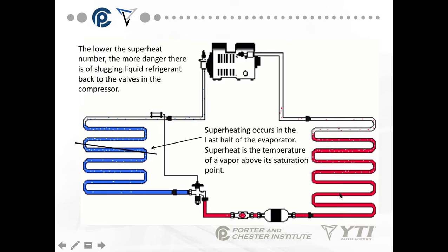Superheating, which is the opposite of sub-cooling, occurs in the last half of the evaporator. Superheat is the temperature of vapor above its saturation point. We're absorbing heat through the boiling process — a latent heat change, going from liquid to vapor — and still absorbing some heat as the refrigerant leaves the evaporator. The lower the superheat number, the more danger there is of slugging — sending liquid refrigerant back to the valves of the compressor. Superheat in most systems is between 8 and 12 degrees.